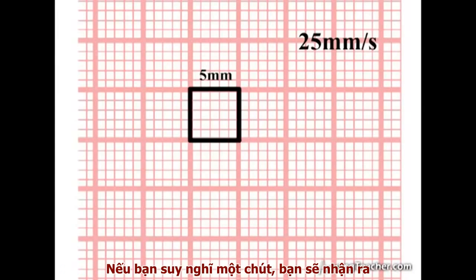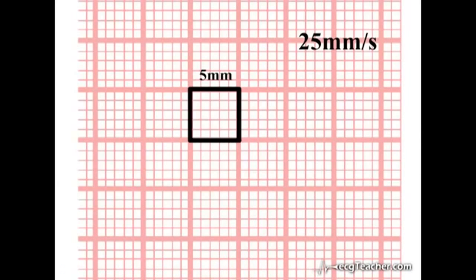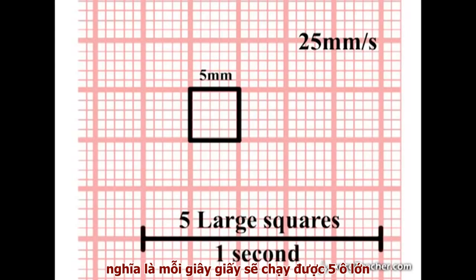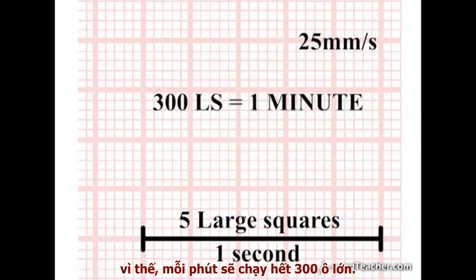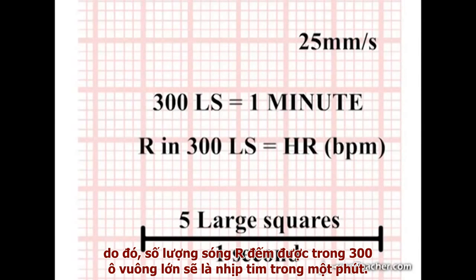This means that distance on the ECG paper equates to time. At a recording rate of 25mm per second, 5 large squares are covered in 1 second. So 300 large squares represents 1 minute. Therefore, the number of R waves in 300 large squares is the heart rate in beats per minute.